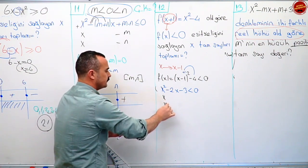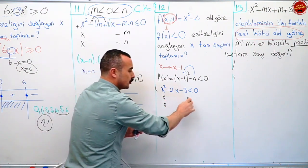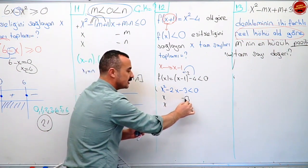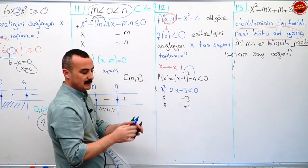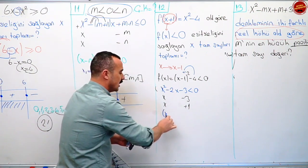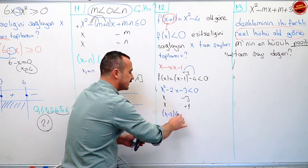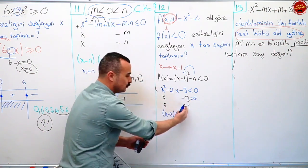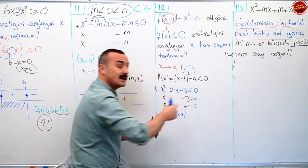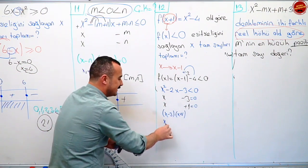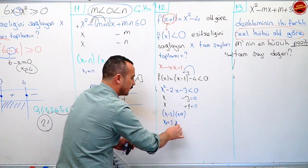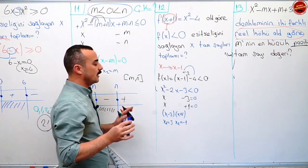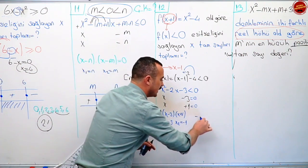Artık standart bir ikinci dereceden eşitsizlik sorusu oldu. x kare, 3 ile 1'in çarpımı. Eksi ikiyi verebilmesi için buna eksi, bunu artı verdim. Ne oldu? x eksi üç çarpı x artı bir. Bunu sıfır yapan değer 3, bunu sıfır yapan değer eksi bir. Kökleri bul: x₁ eşittir üç, x₂ eşittir eksi bir. Tablomu yapacağım: küçük köküm eksi bir, büyük köküm üç.